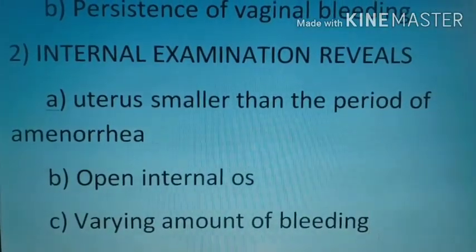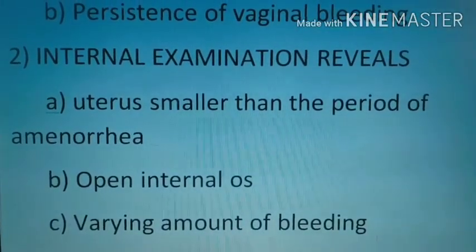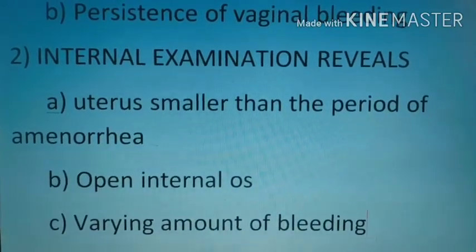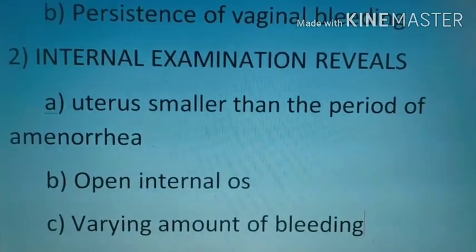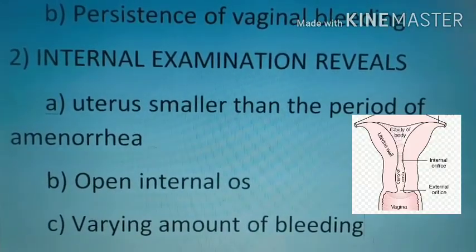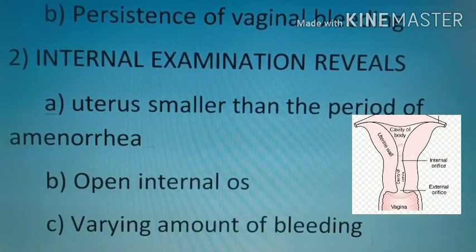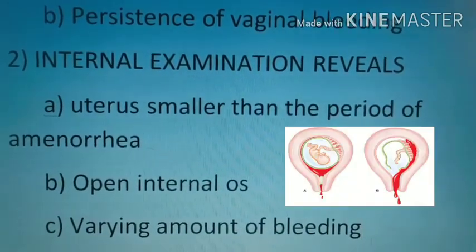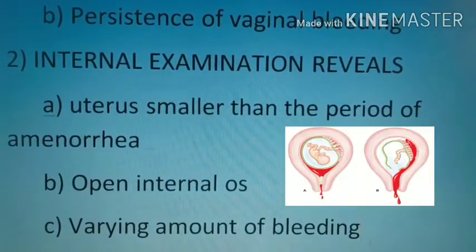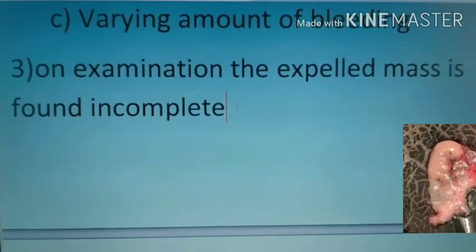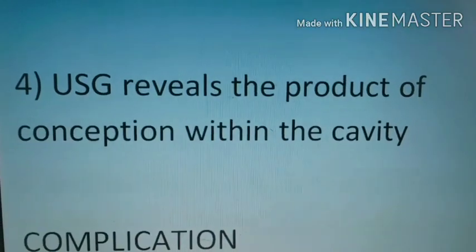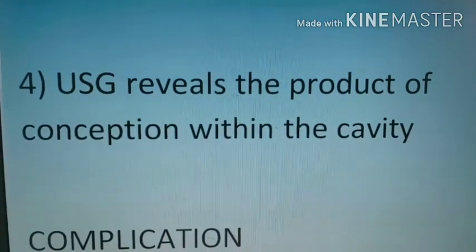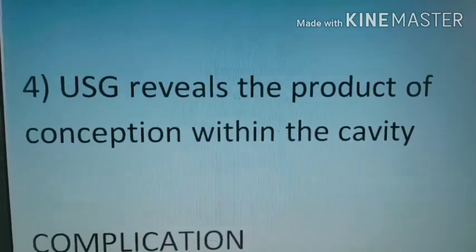Next is internal examination. This will reveal the uterus is smaller than the period of amenorrhea because the product of conception has already been expelled, so the uterus is no more distended. The internal os will remain open and there is a varying amount of bleeding. On examination, the expelled mass is found incomplete, and USG reveals the products of conception are still within the uterine cavity.